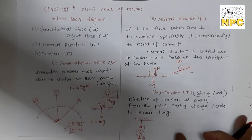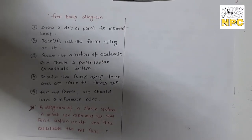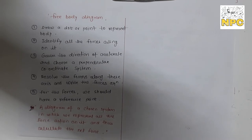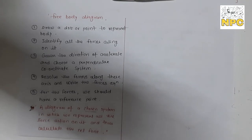Now, free body diagram. We have learned about three forces, so now let's understand how to make a free body diagram. A free body diagram is a diagram of a chosen system in which we represent all the forces acting on it and calculate the net force.